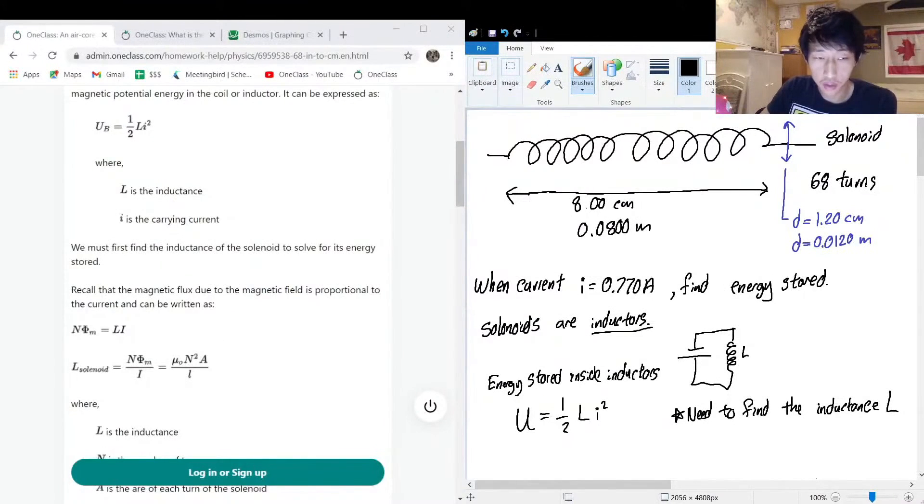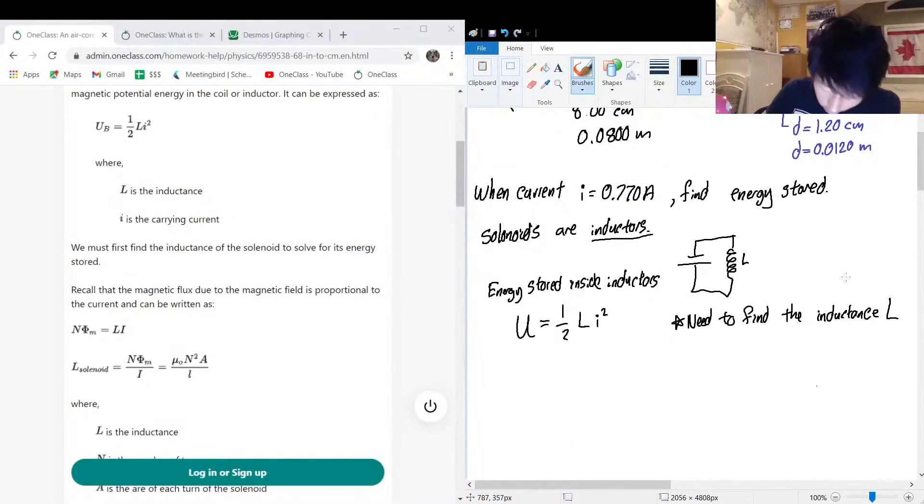So the inductance of a solenoid, solenoid inductance, L is equal to, let's just use this equation. L is equal to mu naught, which is a magnetic constant, multiplied by the number of turns squared, multiplied by the area of each turn of the solenoid, all divided by the length of the solenoid.